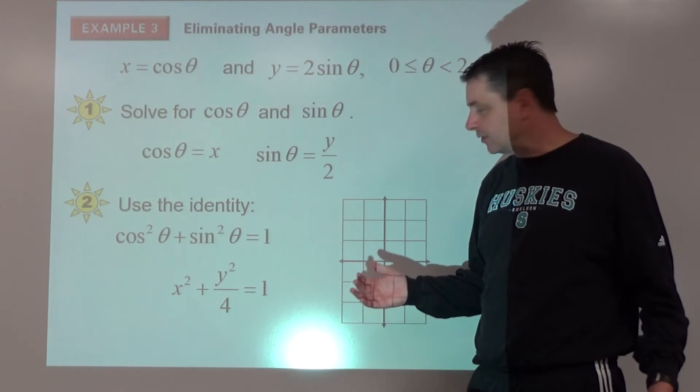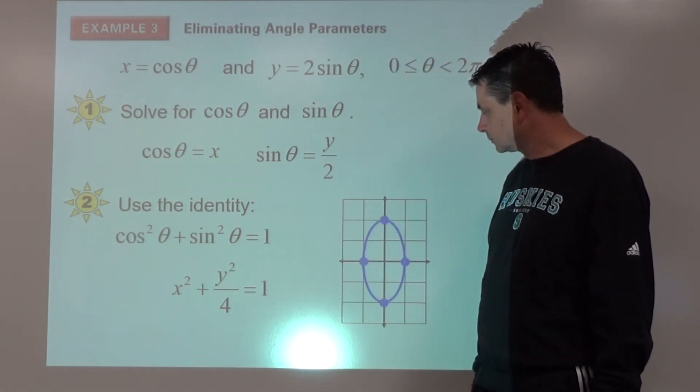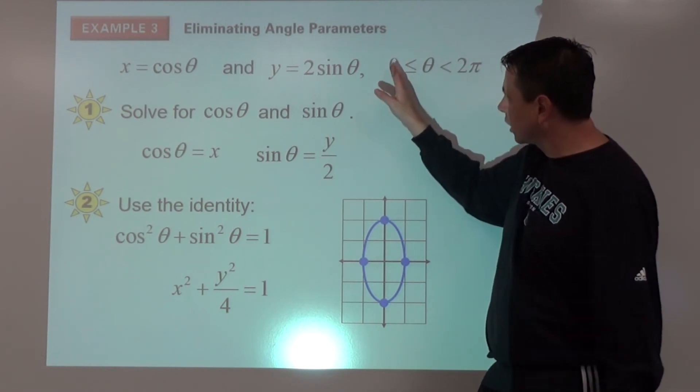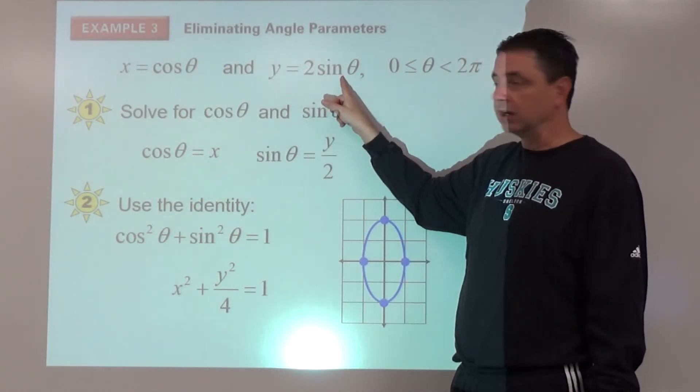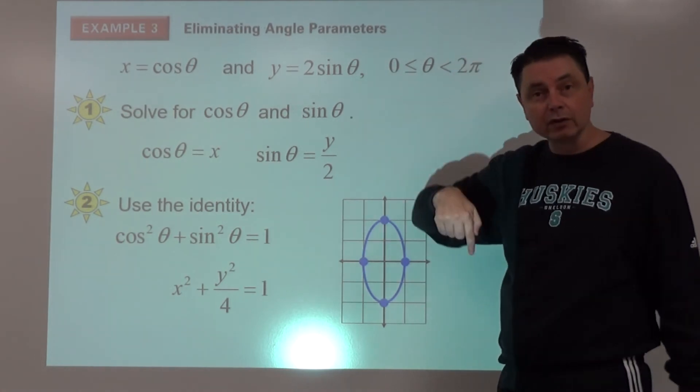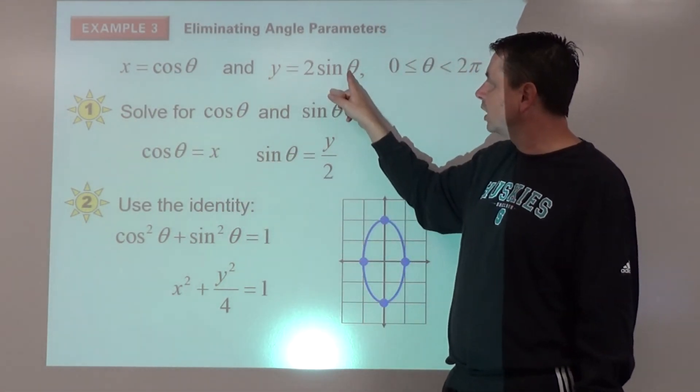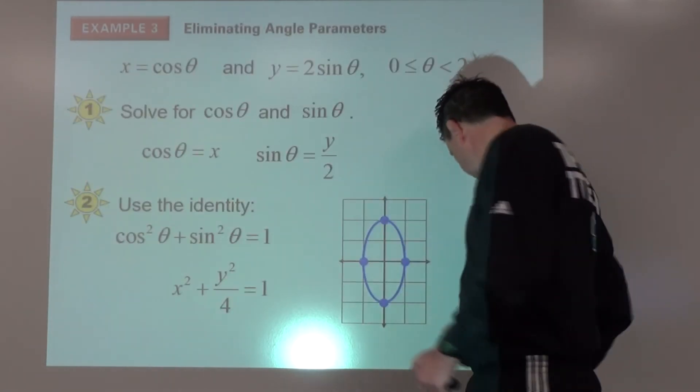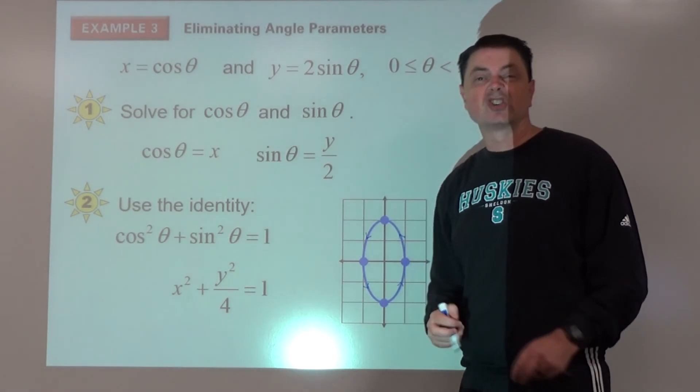It's an ellipse. We could graph that in rectangular form. Left and right one, up and down two. Now, as far as the arrow, which way are we going here? Let's go back to this and say, if we started at zero, what is the cosine of zero? One. What is the sine of zero? Zero. So we're starting at (1, 0). This would be our start in our interval. Now let's travel. Let's go to π/2. Cosine of π/2 is 0. Sine of π/2 is 1. 1 × 2 is 2. So we would now be here. So we went from there to there. So it tells us we are going in this direction. So we could put in arrows to show which direction our curve is moving.